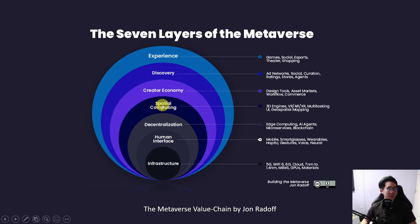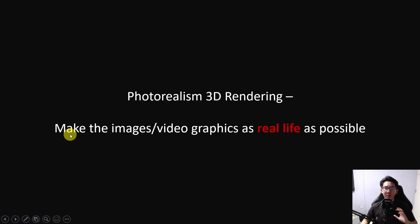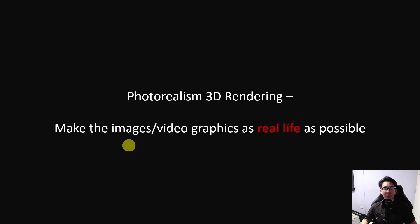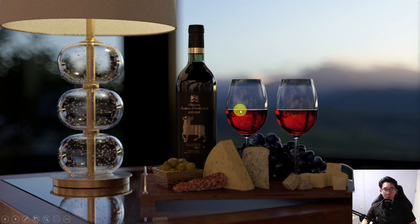In particular, Render Network falls under the category called spatial computing, which is about 3D engines, VR, and AR. In short, it's about making images and video graphics as true to real life as possible. That is what is meant by 3D rendering, and you can see that this photo is one example of a rendered graphic.